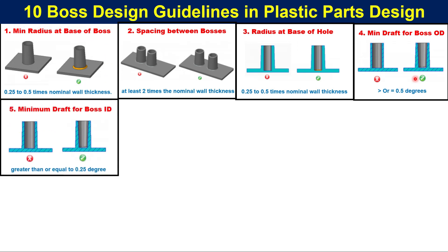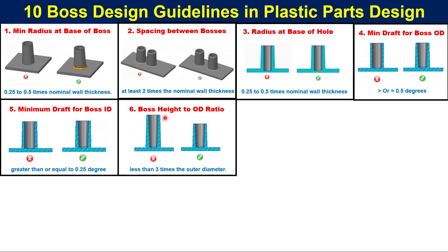Guideline 5: Minimum draft for the boss ID. The minimum draft on the internal diameter of the hole should be greater than or equal to 0.25 degrees.